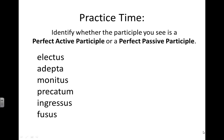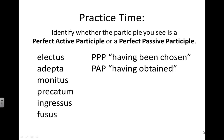Let's see how you did on identifying these participles. Electus is a perfect passive participle from the verb elegere, and this one will translate as 'having been chosen.' Adepta is a perfect active participle — 'having obtained' — it's given to you in the list as adeptus, adepta, adeptum, an adjective. Monitus is the perfect passive participle from the verb moneo, monere, monui, monitus — 'having been warned.'